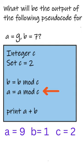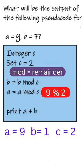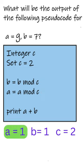Then in the fourth line we have to perform a equals to a mod c. a contains 9 and c contains 2. So 9 mod 2 gives us 1.